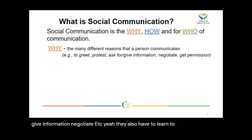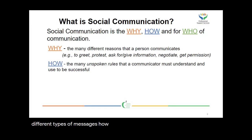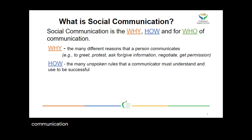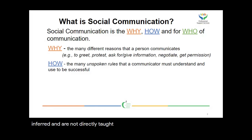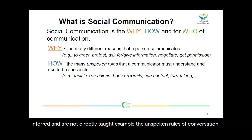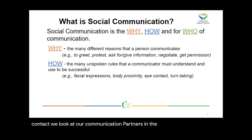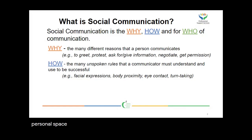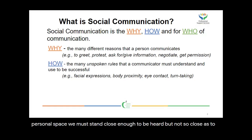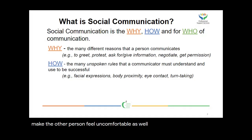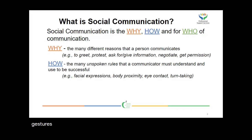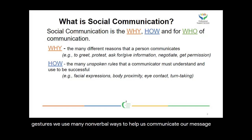They also have to learn to understand these different types of messages. How to communicate a message is also very important to learn. A good communicator understands the unspoken rules of communication. These are typically conversational rules that often have to be inferred and are not directly taught. For example, the unspoken rules of conversation include turn-taking — a conversation must have at least two alternative voices — eye contact, where we look at our communication partners in the eye most of the time, and personal space. We must stand close enough to be heard but not so close as to make the other person feel uncomfortable. As well, we use facial expressions and gestures — many nonverbal ways to help us communicate our messages more clearly to our listeners.